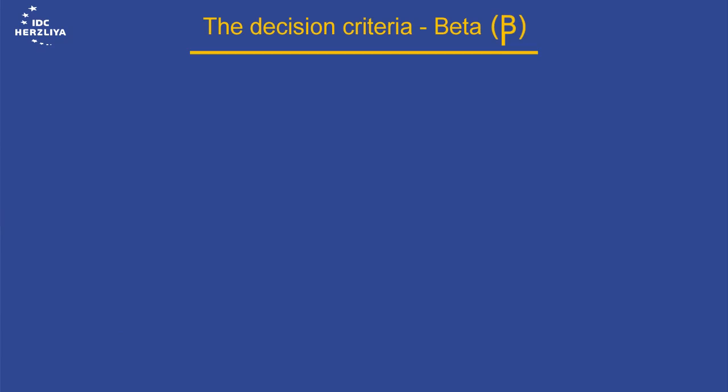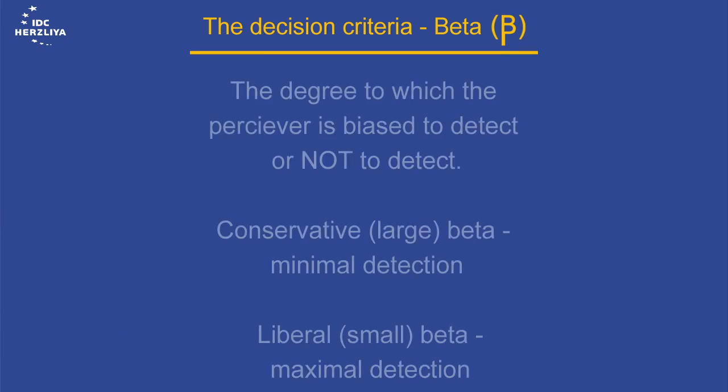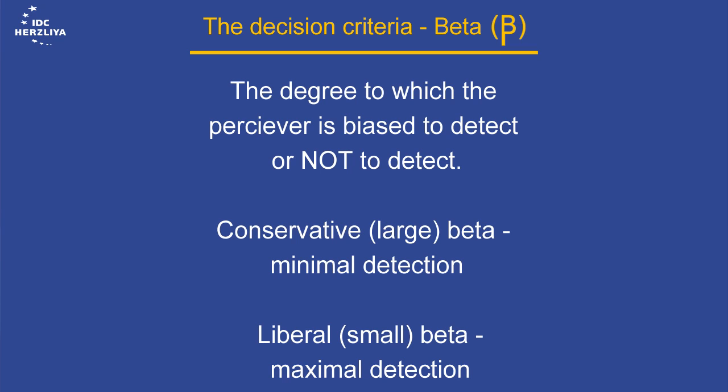There is one more thing that impacts the decision. What do you want? It's difficult to decide. Exactly, Shira, you are right. The decision criteria, beta, the extent to which the perceiver is open or closed to detect the signal.